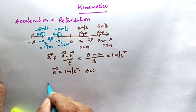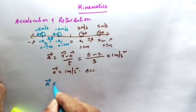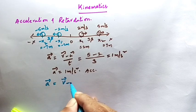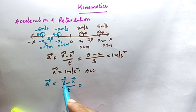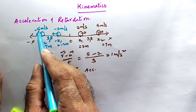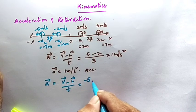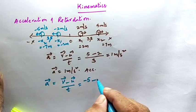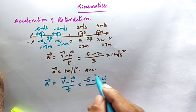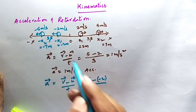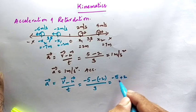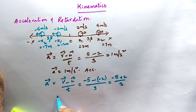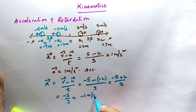Now, acceleration is again final velocity minus initial velocity divided by time. Final velocity is −5 m/s, initial velocity is −2 m/s, time is 3 seconds. So acceleration = (−5 − (−2)) / 3 = (−5 + 2) / 3 = −3 / 3 = −1 meter per second squared.